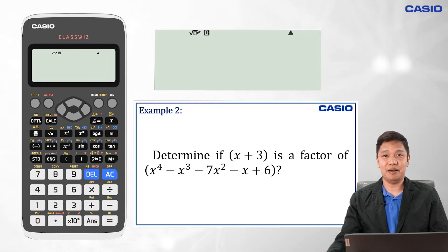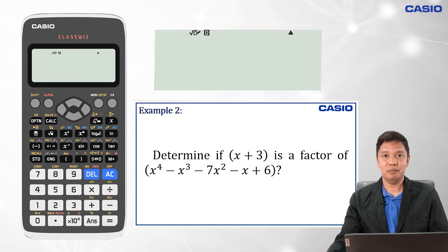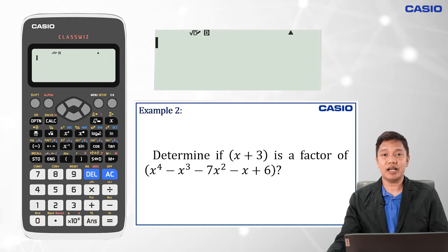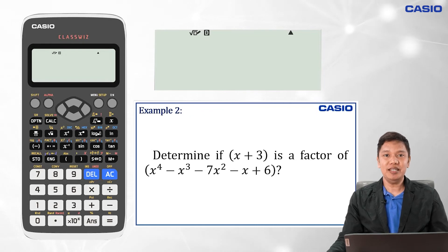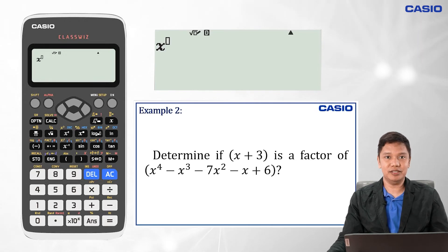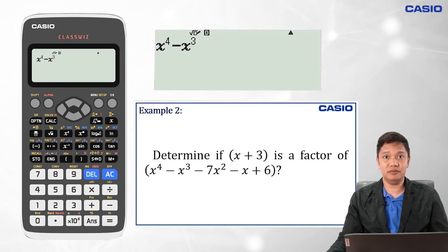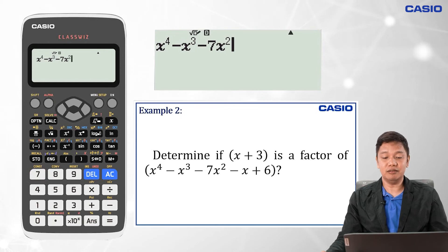Let us consider the next example. We are asked to determine whether the binomial x plus 3 is a factor of the polynomial x to the fourth minus x cubed minus 7x squared minus x plus 6. Using our Casio ClassWiz, we input the polynomial by pressing: x, exponent button, 4, arrow right, minus x, then Shift and the squared button for exponent 3, minus 7x, then squared for exponent 2, then minus x plus 6.